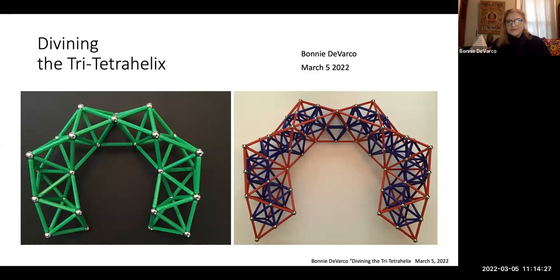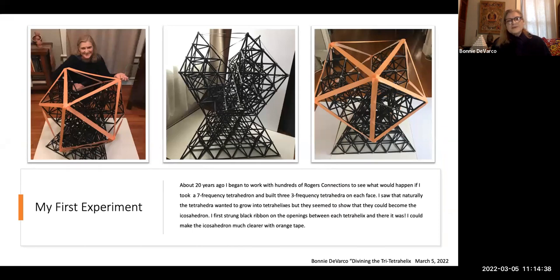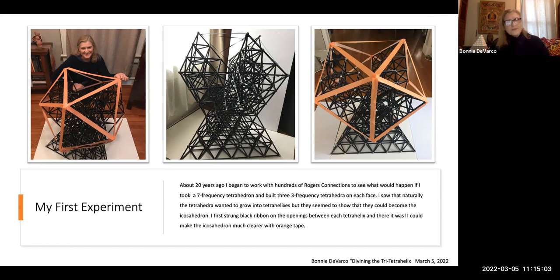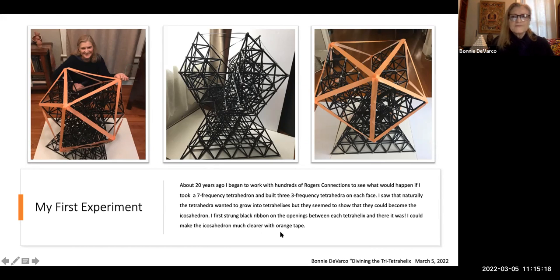Going back many years ago, Bobby Jaber gave me his old Zometool connections — tons of them — and I just started making models. I kept making this model of a seven-frequency tetrahedron in the center. I said to myself: what if we do a three-frequency tetrahelix out of every phase? So I did that and kept walking around this very large structure. I started to see, wow, this looks like an icosahedron. But it's almost like the icosahedron in the middle of its transformation into vector equilibrium.